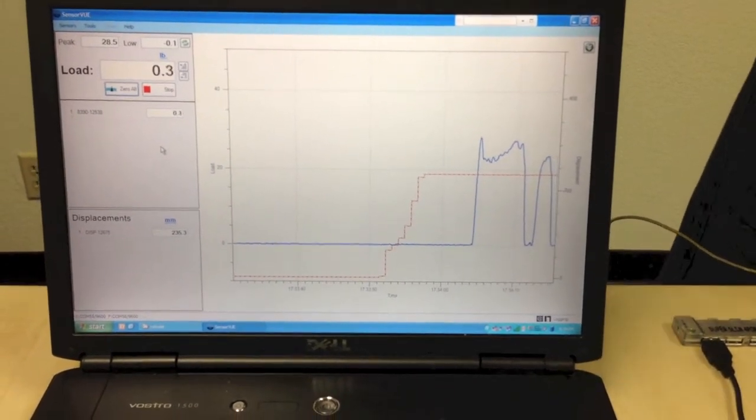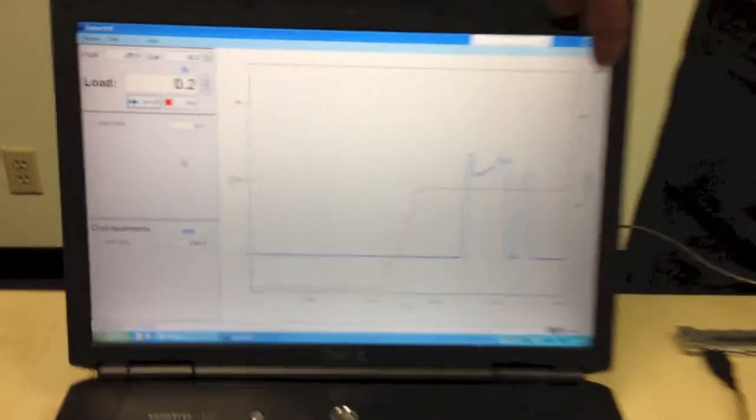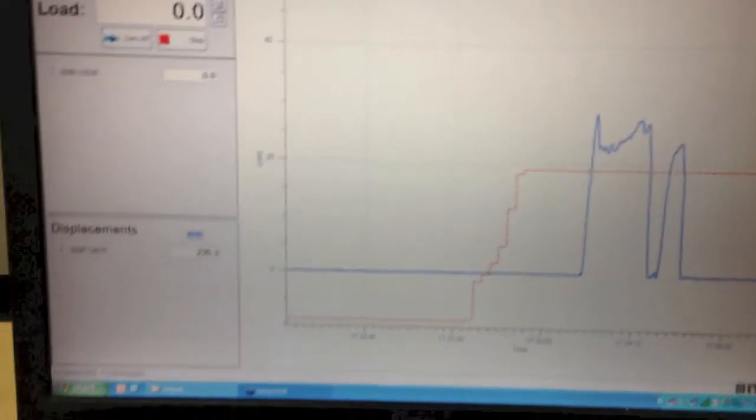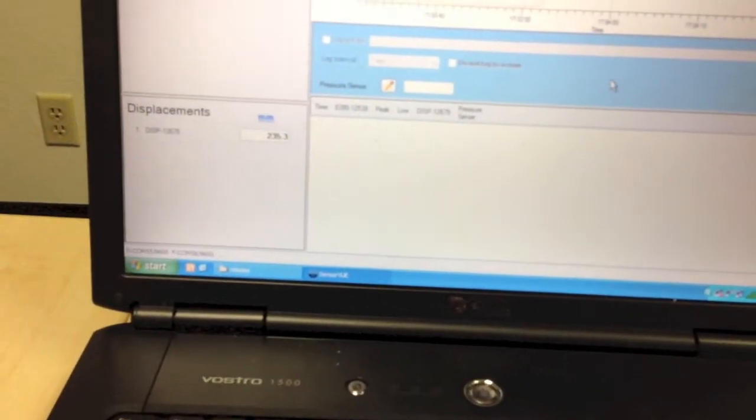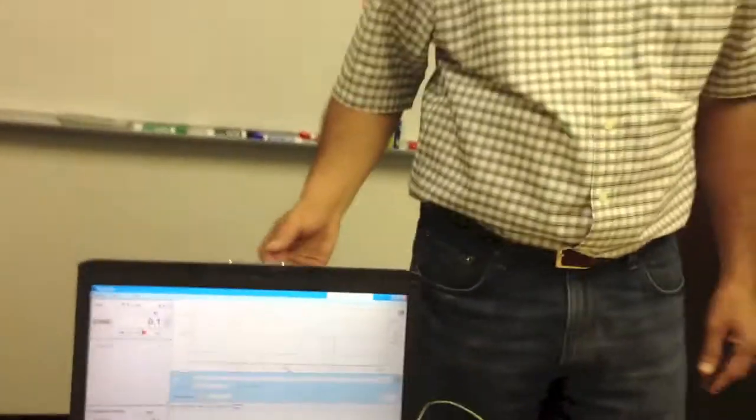We can also log the data here. And if you click on this screen here, you can see that there is a log version. And you can actually log the data to a comma-separated file and then bring it up in Excel later on for further analysis.